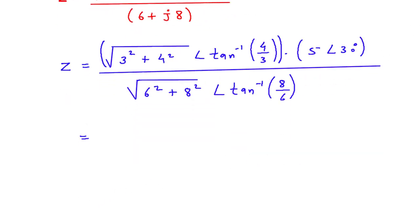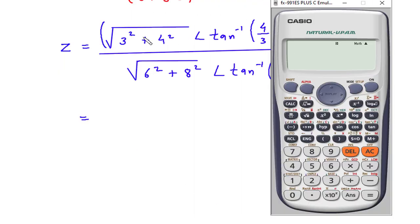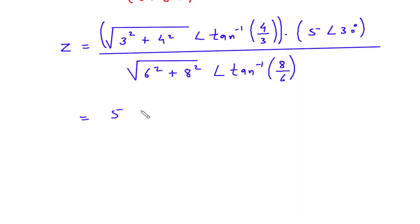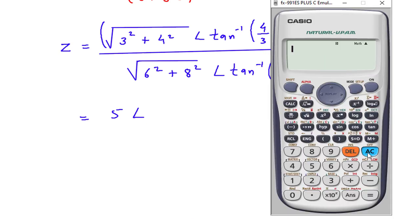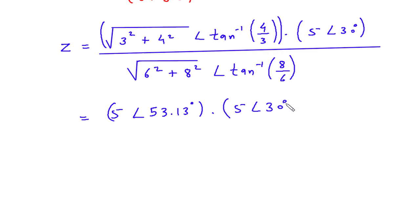Now if we solve this, √(3² + 4²) equals 5. So it is 5 at an angle of tan⁻¹(4/3), and tan⁻¹(4/3) is 53.13 degrees. Now we have to multiply this with 5 at an angle of 30 degrees.